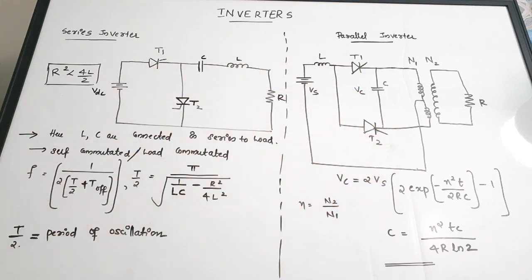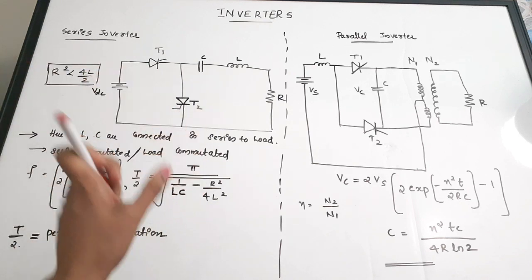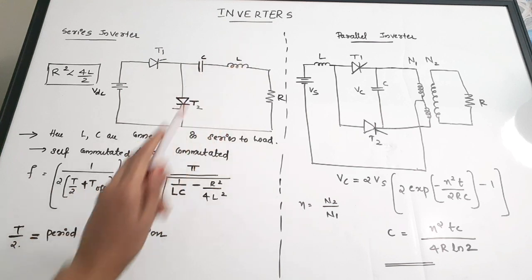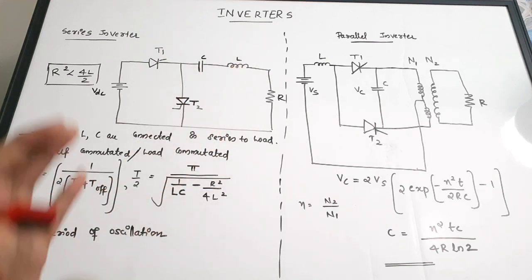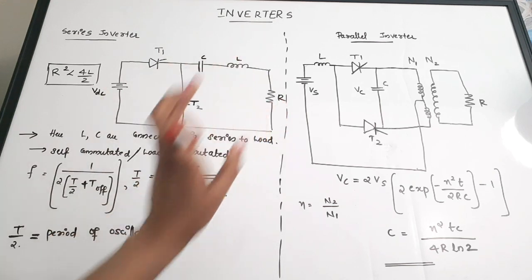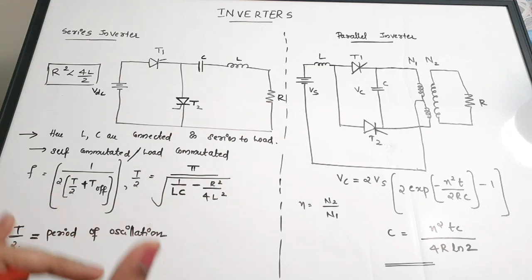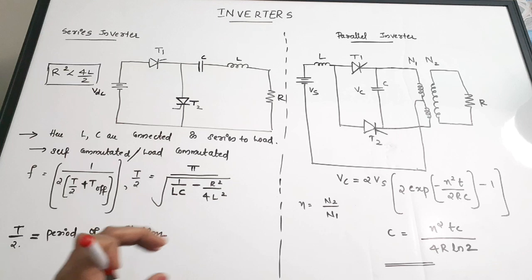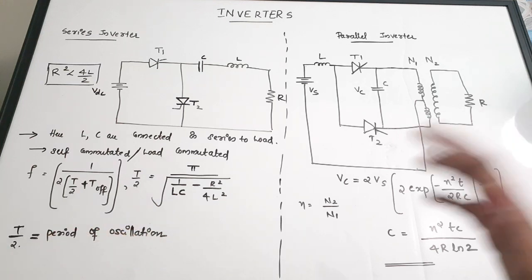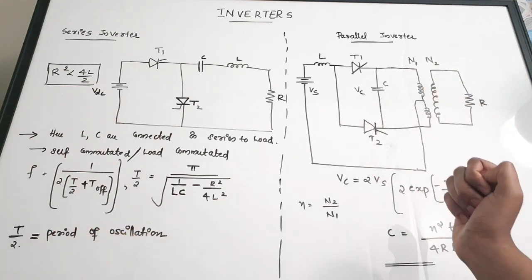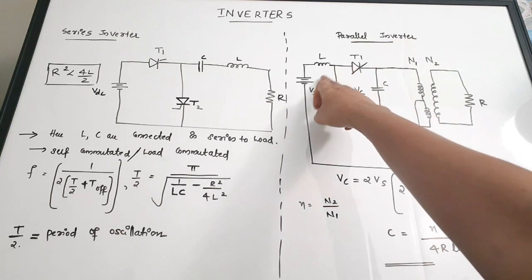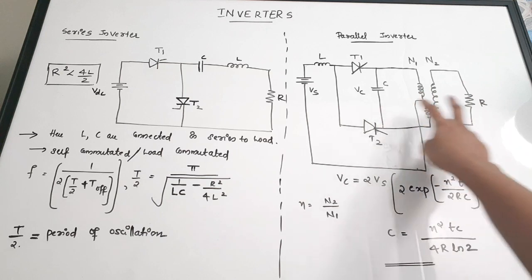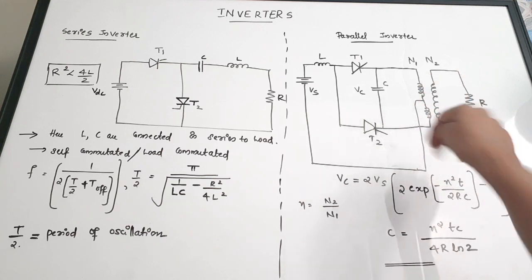In a series inverter, there are two commutating elements L and C, and these elements come in series with the load resistance. Due to the series connection of inductance and capacitance, we call this a series inverter. In the parallel inverter, L and C are again present, but the capacitor comes in parallel with the load resistance via a transformer.